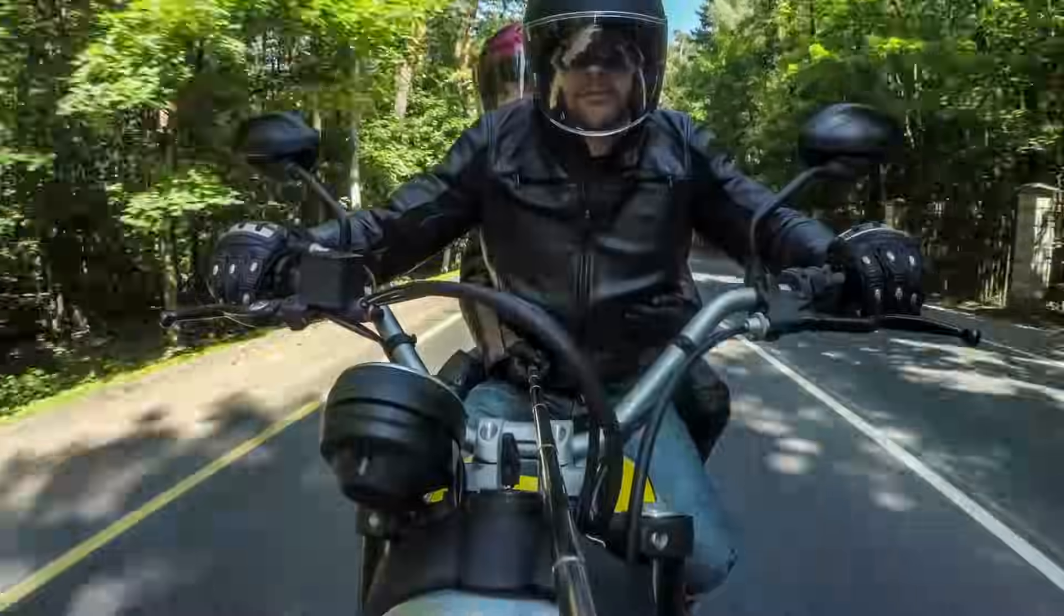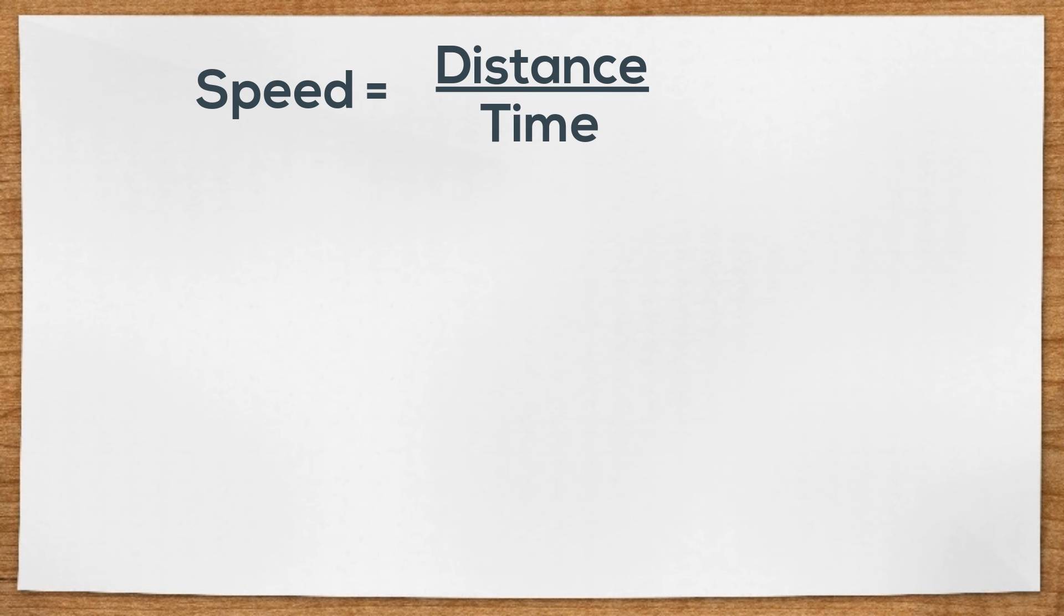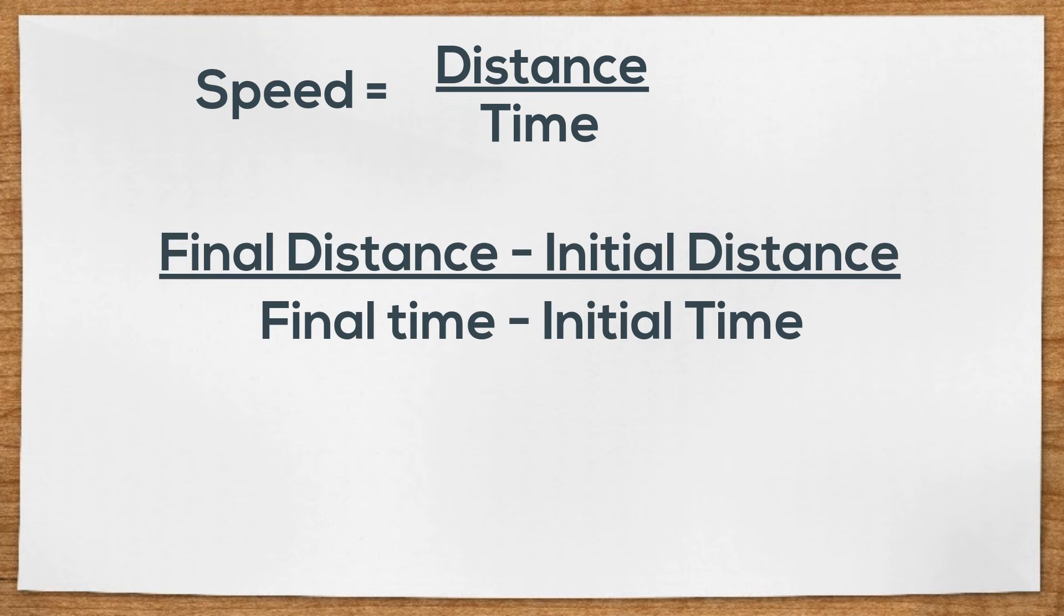Speed is distance divided by time. You can also use final distance minus initial distance divided by final time minus initial time. You can also graph speed.